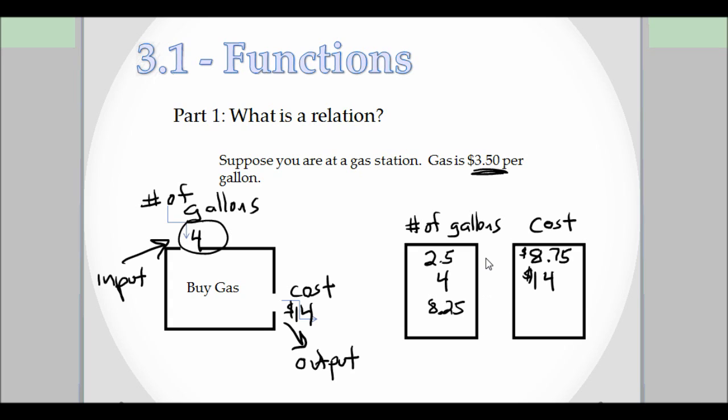If we bought, say, 8.25 gallons, how much would that cost us? So again, you're just going to multiply that by $3.50. And money rounds to two decimals, so it's going to be $28.88. And there you go, that's a relation.